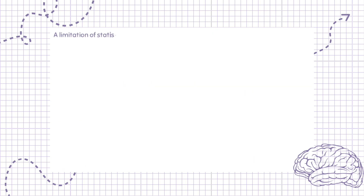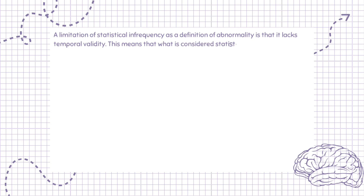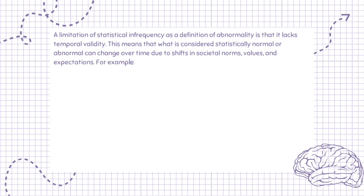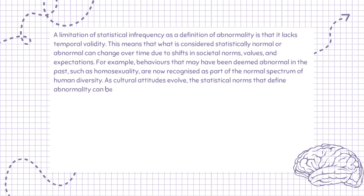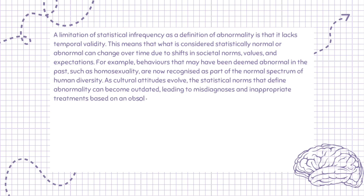A limitation of statistical infrequency as a definition of abnormality is that it lacks temporal validity. This means that what is considered statistically normal or abnormal can change over time due to shifts in societal norms, values, and expectations. For example, behaviors that may have been deemed abnormal in the past, such as homosexuality, are now recognized as part of the normal spectrum of human diversity. As cultural attitudes evolve, the statistical norms that define abnormality can become outdated, leading to misdiagnoses and inappropriate treatments based on an obsolete understanding of human behavior.